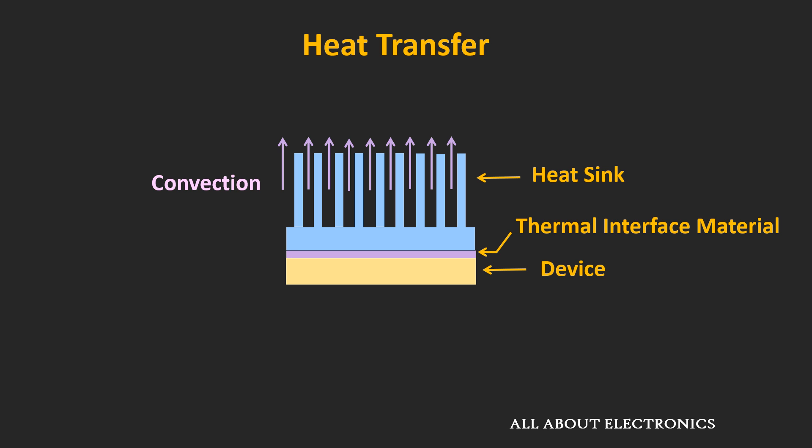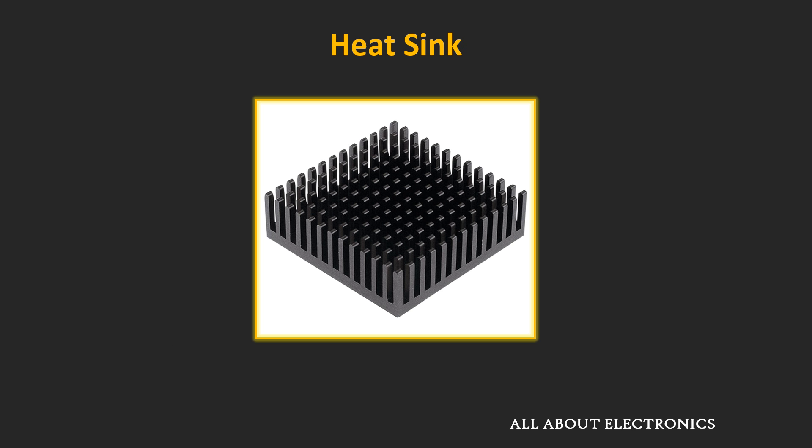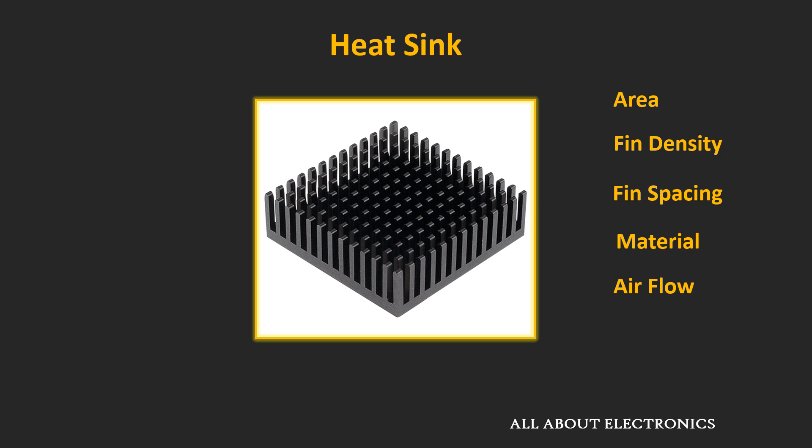The heat sink is designed so that the surface area in contact with the cooling medium is maximized. The idea is that the contact area of the heat sink should be at least 10 to 20 times more than the surface area of the device, which is why this fin-type arrangement is used. The performance of the heat sink — how well it transfers heat — depends on multiple parameters: the area of the heat sink, the fin density, the fin spacing, and the material used. Usually either aluminum or copper is used for construction.